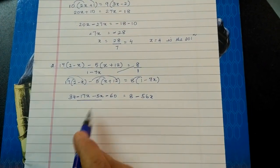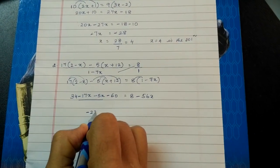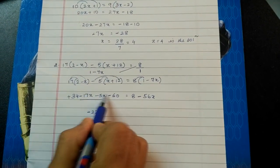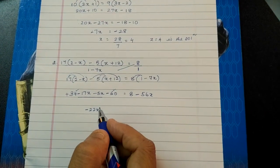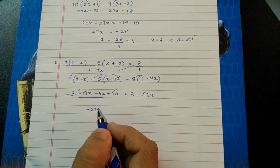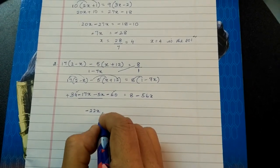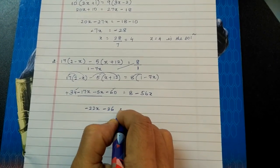Both are minus, that means we will add and put the sign of greater number. And this is plus and this is minus, so one plus one minus means we will subtract and put the sign of greater number. So the answer is minus 6 minus 26.